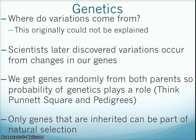Genetics play a role in natural selection. Where do variations come from? This originally could not be explained. Scientists later discovered variations occur from differences in our genes. We get genes randomly from both parents, so probability of genetics plays a role. Remember learning about Punnett squares and pedigrees. Only genes that are inherited can be part of natural selection.